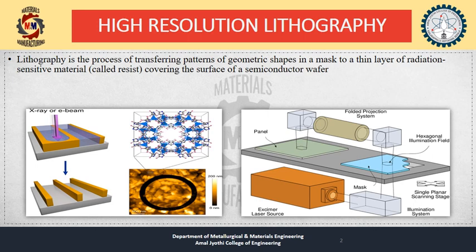Lithography is extensively used in the electronic industry to obtain integrated circuits. For example, the metal interconnect structures on an integrated circuit are very complex and often use over 10 different layers of patterned metal.